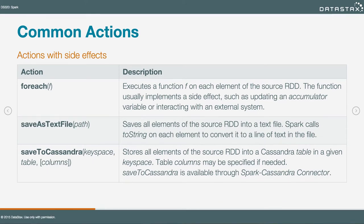Save as text file creates a side effect in the system — it takes that RDD and writes it to a text file in the local file system. Save to Cassandra is one example of the way we can output data to a Cassandra table. That API gets a little richer and we'll look at those details in a separate module.